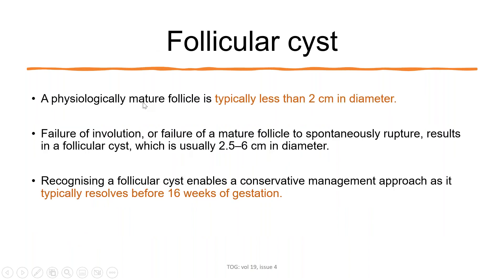Follicular cysts are physiological cysts, usually less than 2 cm in diameter. They occur due to failure of involution or failure of a mature follicle to spontaneously rupture, resulting in a follicular cyst typically 2.5 to 6 cm in diameter. Recognizing a follicular cyst enables a conservative management approach, as it typically resolves before 16 weeks of gestation.